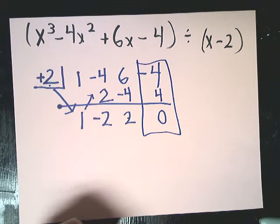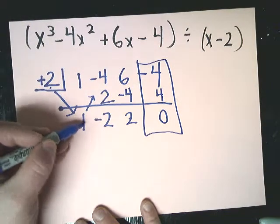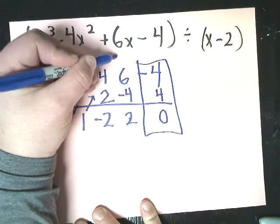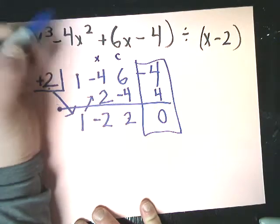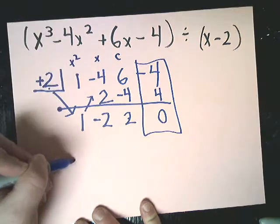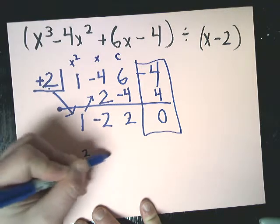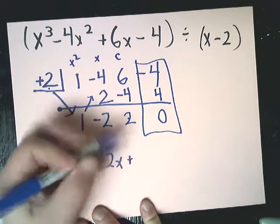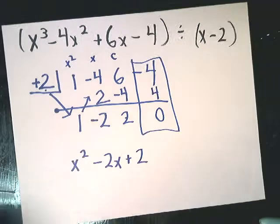That's actually a good thing. That's what you want to have happen, because this section is my remainder section. This would be my constant term. This would be my x section. This would be my x squared. So I get x squared minus 2x plus 2, with a remainder of zero.